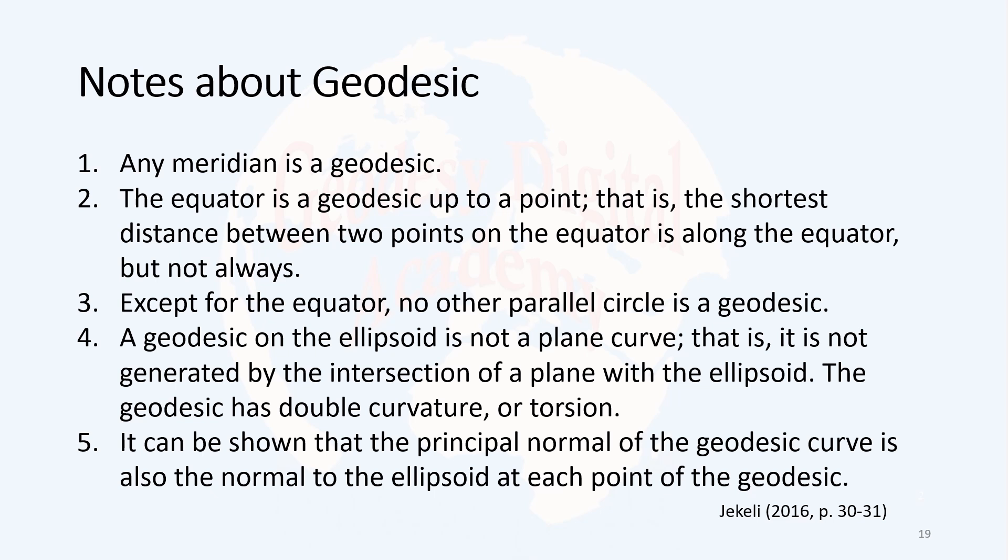Notes about geodesics: Any meridian is a geodesic. Any two points that we select along the equator is also a geodesic. Except for the equator, no other parallel circle is a geodesic. A geodesic on the ellipsoid is not a plane curve; that is, it's not generated by intersection of a plane with the ellipsoid.